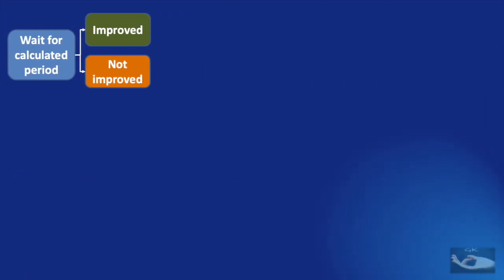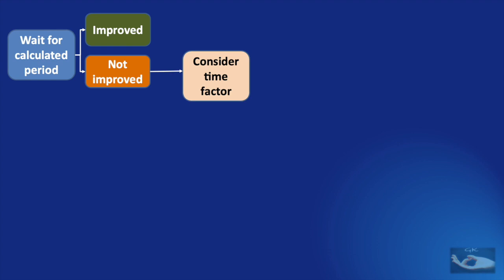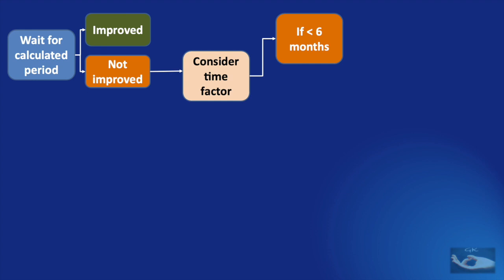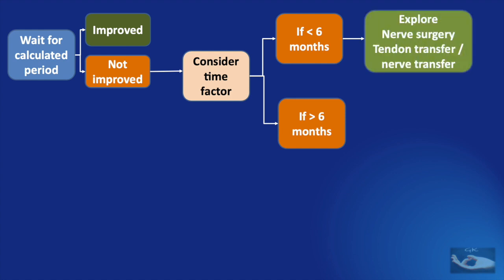If it has improved, we only need to give the patient resisted exercises to improve the strength of the muscles. If it has not improved, we need to consider the time factor. This is not only for patients waiting after surgery or conservative management, but also for patients presenting late after injury or surgery done elsewhere. It could be less than 6 months from the time of injury or surgery, or more than 6 months. Generally, we consider 6 months as the period for evaluation, as it is the average time for a radial nerve injury at the level of the arm to recover.